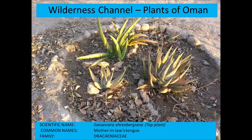Sansevieria ehrenbergiana — in the foreground are aloes, but in the background is the sansevieria, the greener one. The foreground plants are Aloe enormis. The plant with green leaves is called mother-in-law's tongue because it has very sharp leaf tips. Sansevieria ehrenbergiana is one of the endemics to Dhofar.